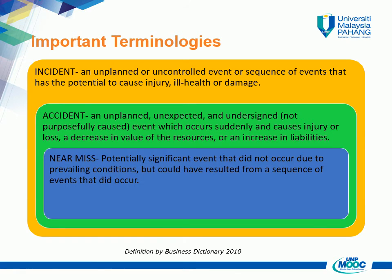Near miss is a potentially significant event that did not occur due to the prevailing conditions, but could have resulted from a sequence of events that did occur. Notice that all accidents and near misses are incidents, but not all incidents are accidents.